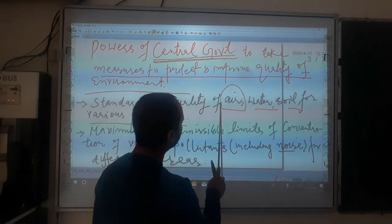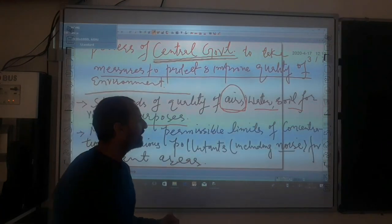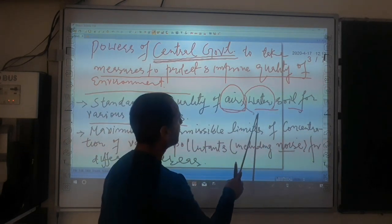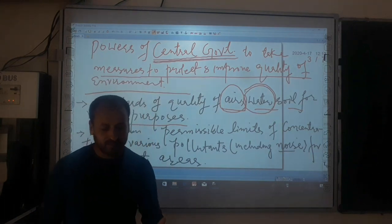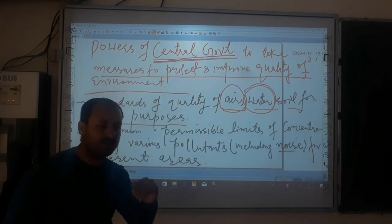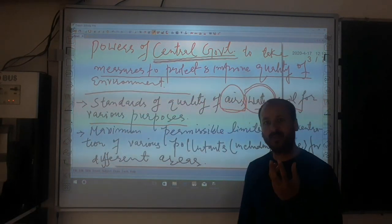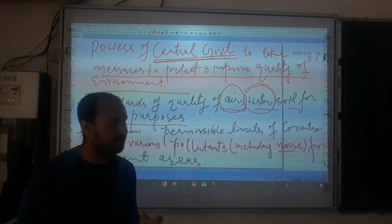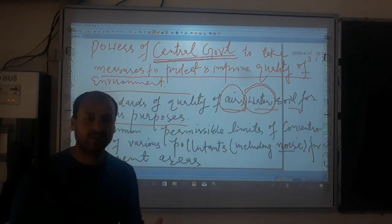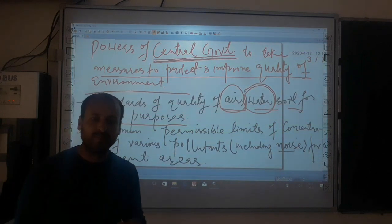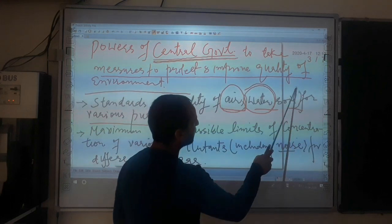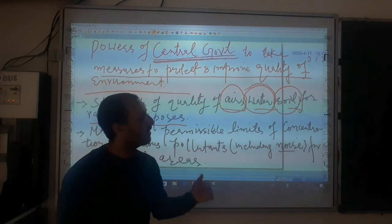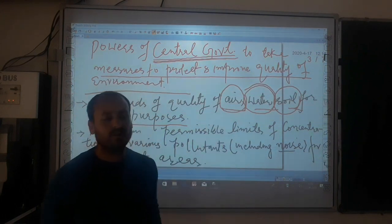Different locations or geographical areas have specified different standards of soil quality. Similarly, how much amount of pollutant may be present in the air in a residential area, in a commercial area, or in an industrial area. Similarly, the water quality standards have also been fixed — how much pollutant can be present in water utilized for industrial, agricultural, or public distribution purposes. Be it air, water, or soil, different standards for different parameters have been fixed by the central government depending upon the purpose for which they are used.